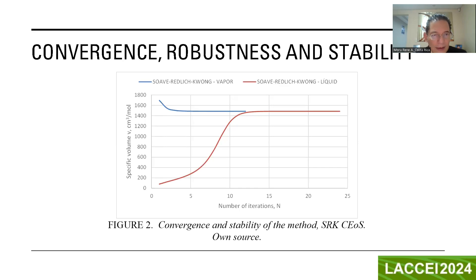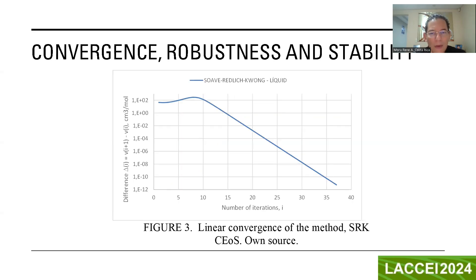We can see here the results of convergence, robustness, and stability of the method. Here we can see convergence and stability from very different initial values, and here we can see the linear convergence of the method.